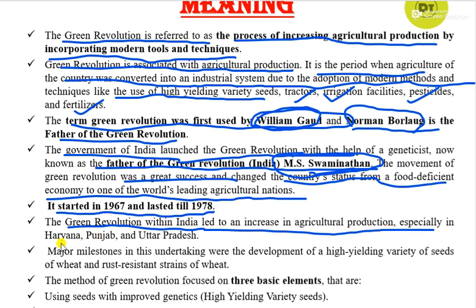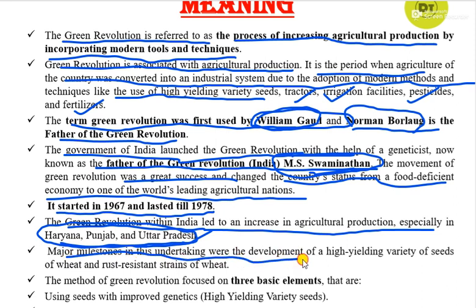The green revolution led to an increase in agricultural production, especially in Haryana, Punjab, and Uttar Pradesh — these three states were under the major impact of green revolution. Major milestones included the development of high yielding variety seeds of wheat and rust resistant strains of wheat.